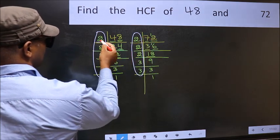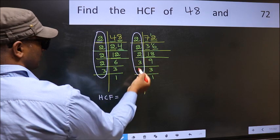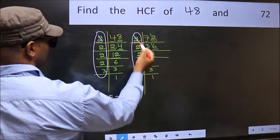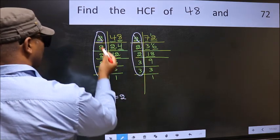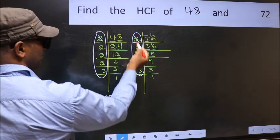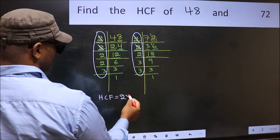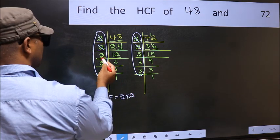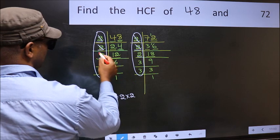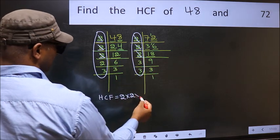Starting with the number 2. Do we have 2 here? Yes. So cut 2 right here. Next number 2. Do we have 2 here? Yes. So cut 2 right here. Next number 2. Do we have 2 here? Yes. So cut 2 right here.